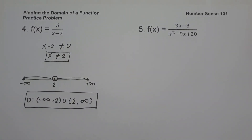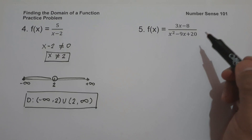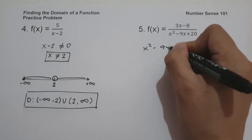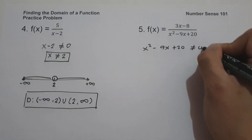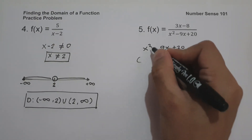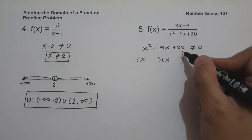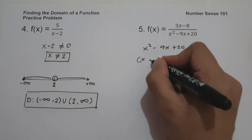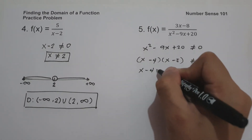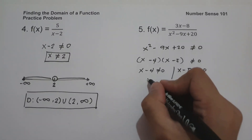On number five, f of x is equal to 3x minus 8 all over x squared minus 9x plus 20. Set the denominator not equal to zero: x squared minus 9x plus 20 ≠ 0. Factoring, we look for two numbers that multiply to 20 and add to negative 9, which are negative 4 and negative 5, giving (x minus 4)(x minus 5) ≠ 0.